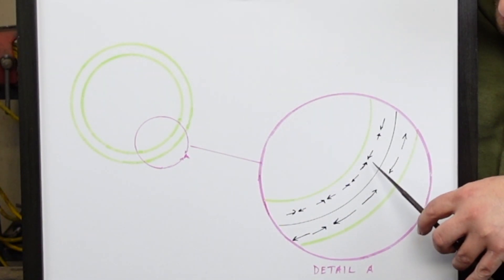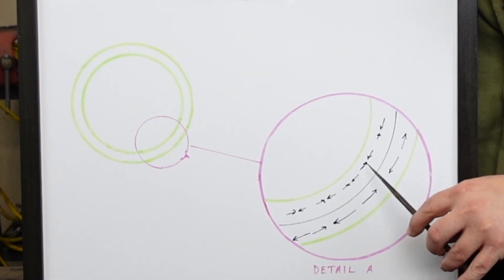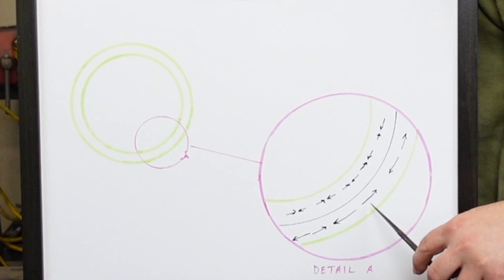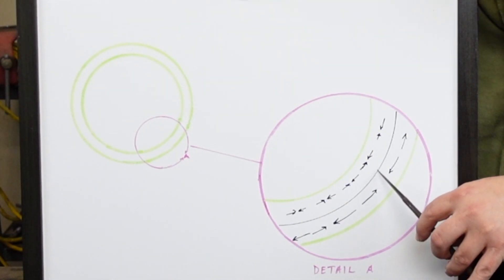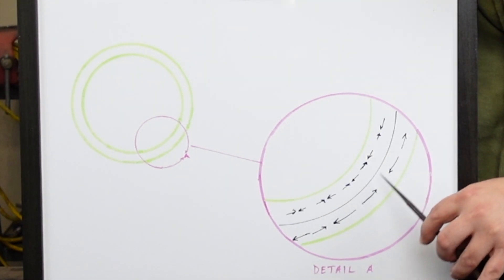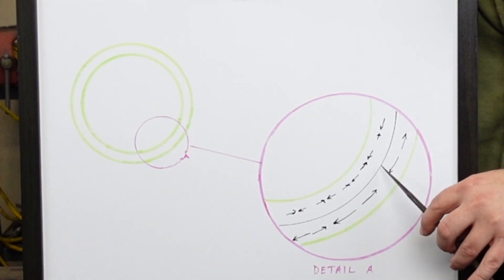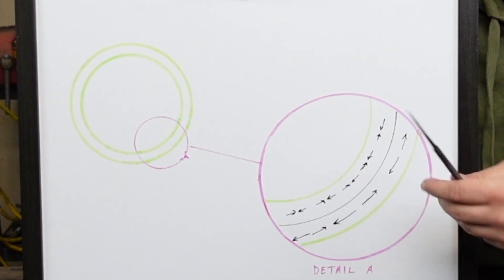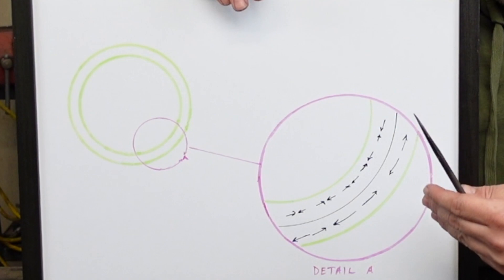on the inside of the curve we're actually in compression. And then on the outside of the curve we're in tension, and then this line here in the middle is the neutral axis, and it is actually the same measurement in the flat as it is rolled.